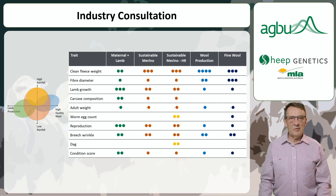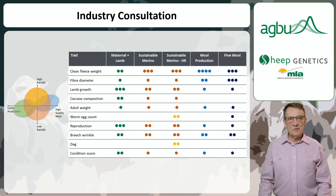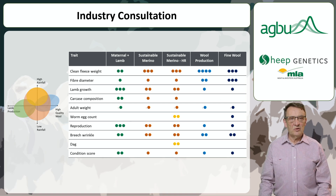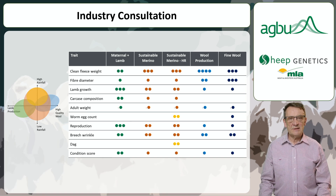The development of these new indexes has been driven by industry consultation involving surveys with breeders, producers and other stakeholders. The responses were grouped by production system and environmental conditions, leading to the creation of five research indexes. These research indexes include maternal lamb, sustainable merino, high rainfall sustainable merino, wool production and fine wool indexes.